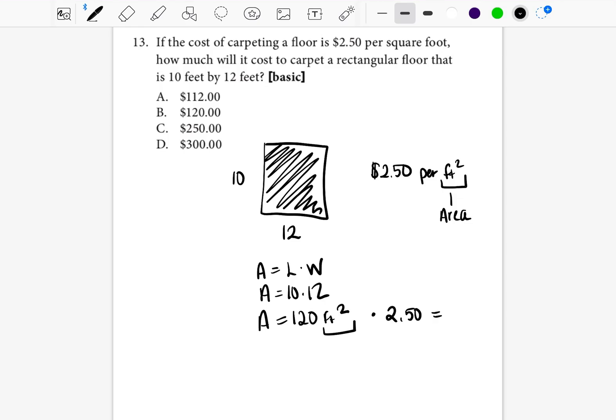So there are some questions on the TSI that will allow you to use a calculator. You'll see that calculator in the corner of your paper. So you can go ahead and put these numbers, 120 times 2.50, into your calculator, and you'll end up getting $300. So the answer is going to be D.